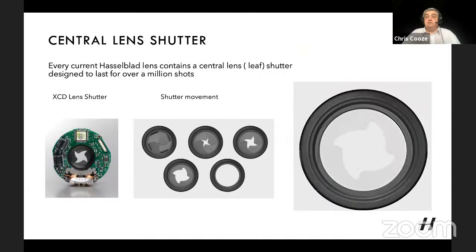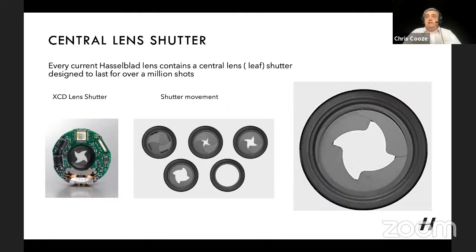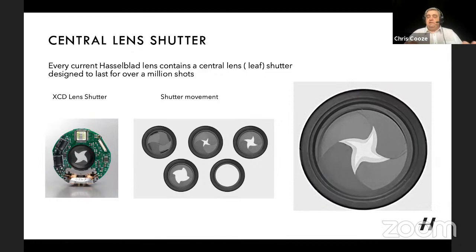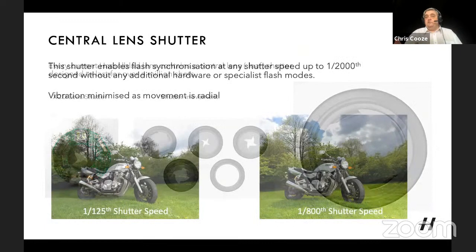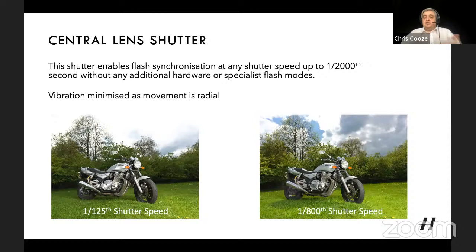One of the big differences between Hasselblad and many other brands is the central lens shutter — a leaf shutter. There are two reasons for this: primarily for flash synchronization, and also because the radial movement of the lens shutter generates very little vibration into the camera body. There is no mechanical shutter in the camera body to cause vibration issues. The main reason is flash synchronization — you can sync with flash all the way up to 1/2000th of a second, which makes synchro-sun type work very simple. You can use standard flash without high-speed triggers.